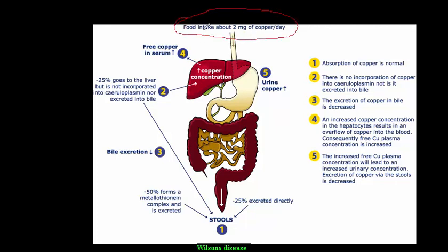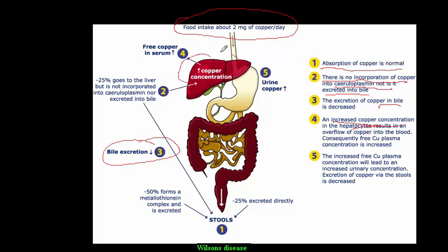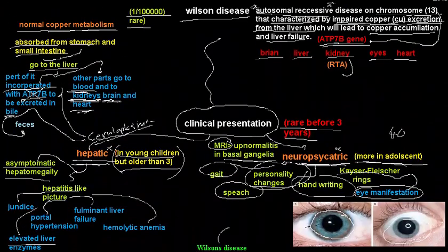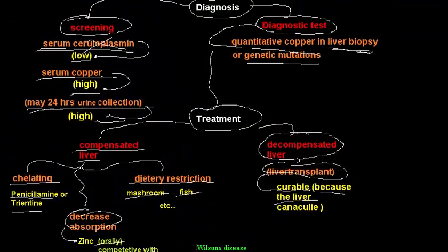To summarize the pathophysiology: copper absorption is normal, but there is no incorporation of copper into ceruloplasmin, leading to no bile or fecal excretion of copper. This causes increased copper concentration in hepatocytes, resulting in overflow of copper into the blood, kidneys, brain, and other organs — producing the pathology of Wilson disease.